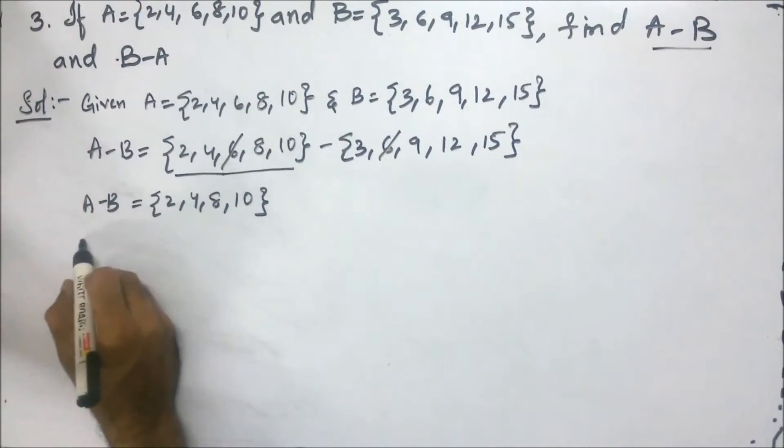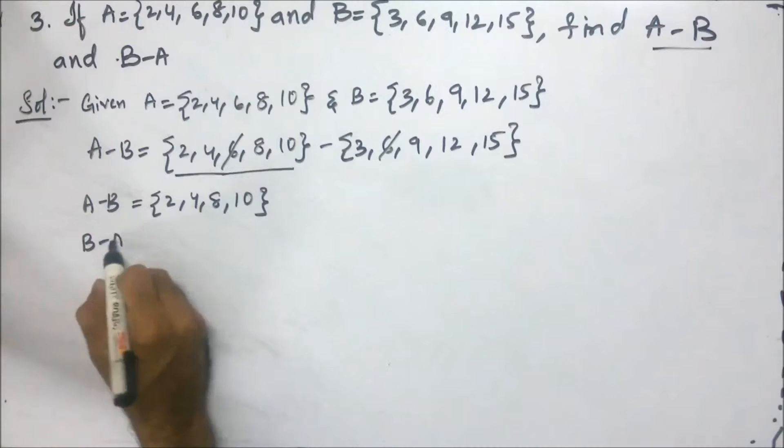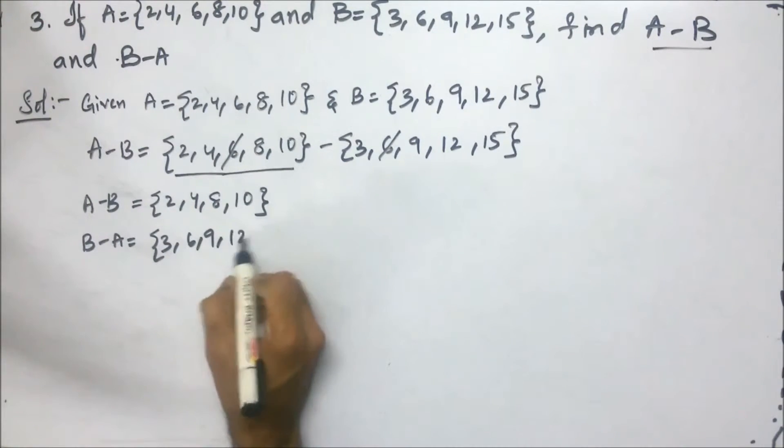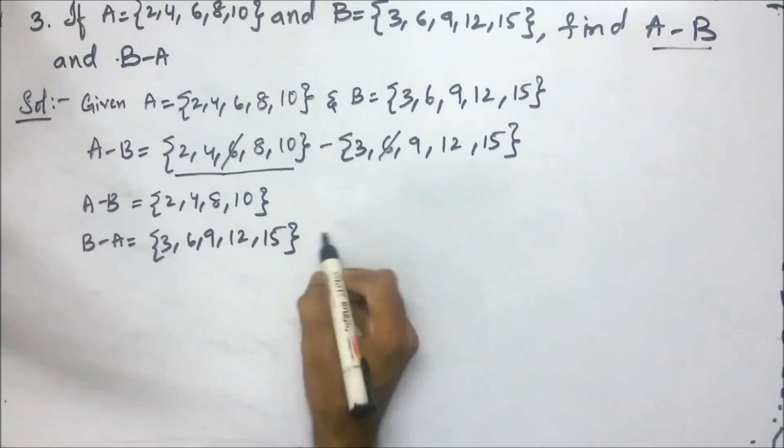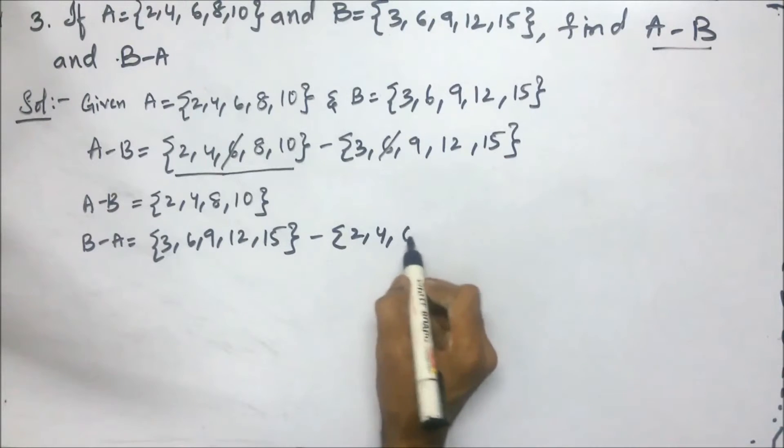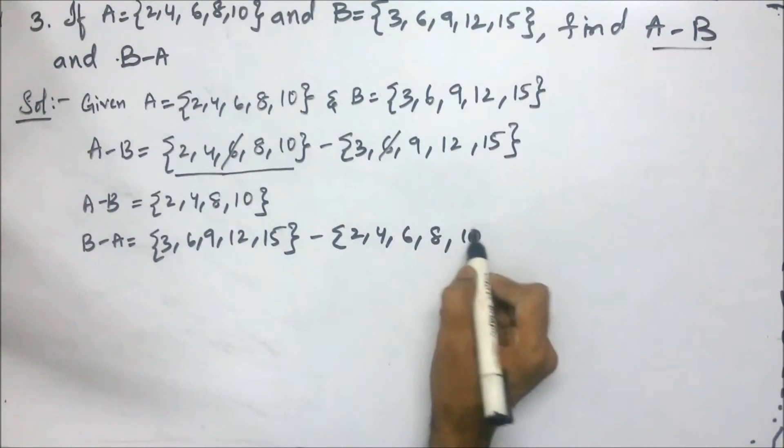Next, we will find B minus A. B is 3, 6, 9, 12, 15 minus A is 2, 4, 6, 8, 10.